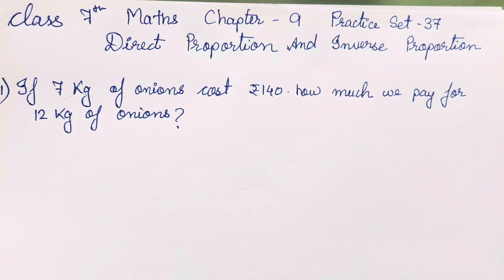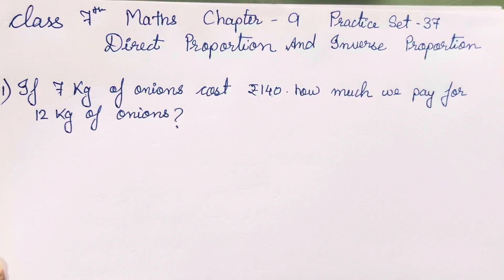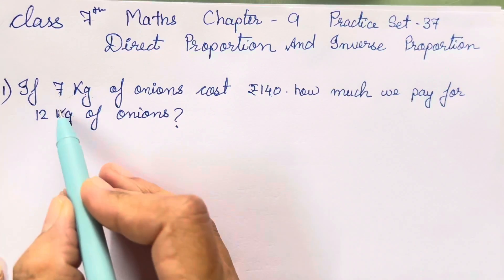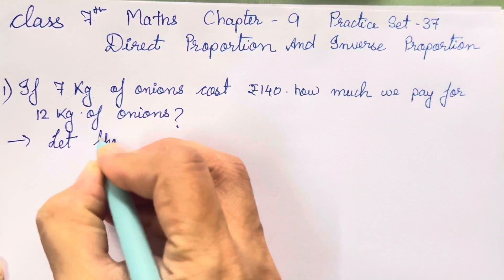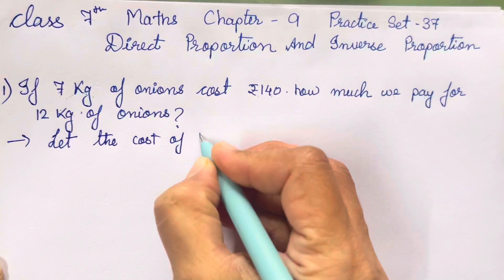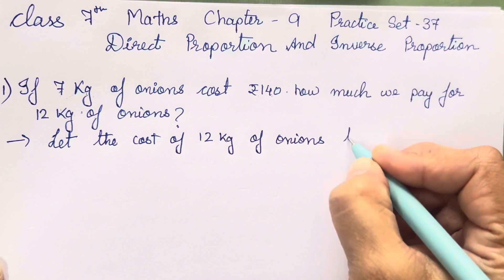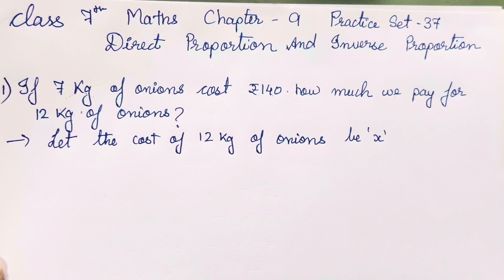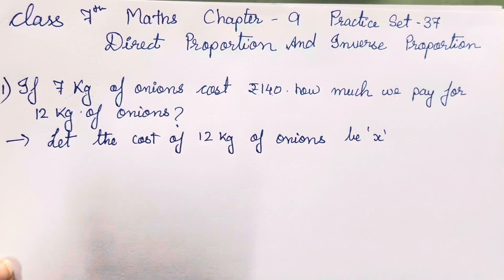By reading the question only, we will be able to understand. So one by one, we are going to study first the direct proportion and then the inverse proportion in the next video. We are going to complete practice set number 37. So let the cost of 12 kg of onions be x. The weight of the onion and its cost are in direct proportion.